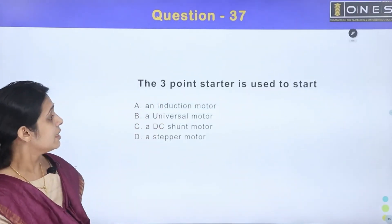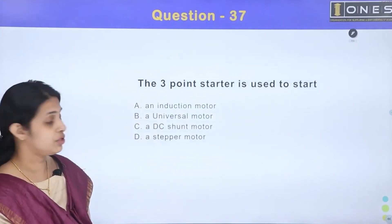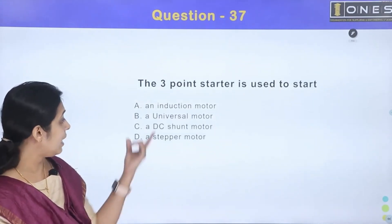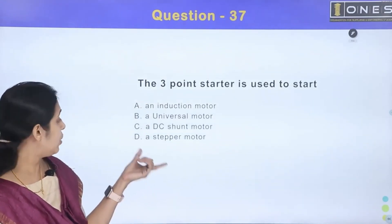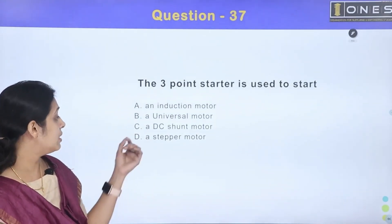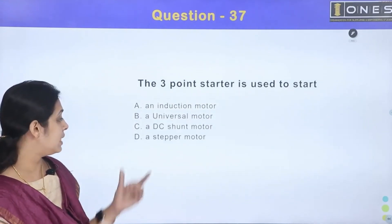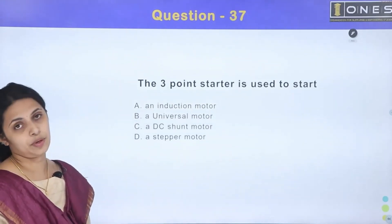Next question: The 3-point starter is used to start — Option A: an induction motor. Option B: a universal motor. Option C: a DC shunt motor. Option D: a stepper motor.